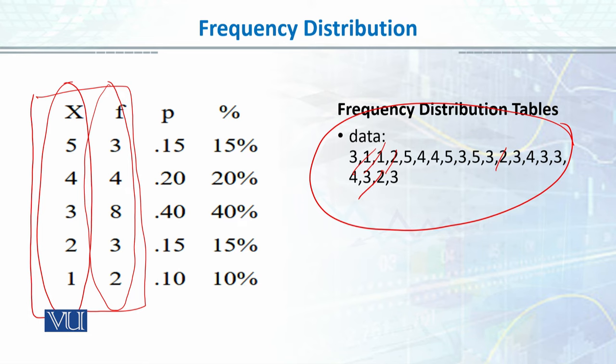we can calculate the proportion and its percentage. Of course, you all know that if our total F is equal, our N is 20. So, in frequency distribution, the third column is proportion and the fourth column is percentage.